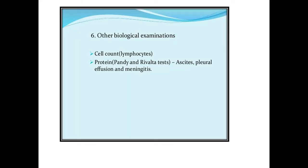Other biological examinations include cell count. In tuberculosis, lymphocytes are low and neutrophils are high. Some protein tests are also done. If the person has abdominal tuberculosis with ascites, or if pleural effusion is present with pulmonary tuberculosis, then protein tests are done.